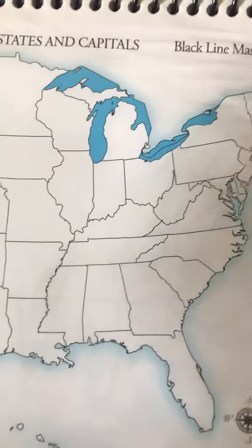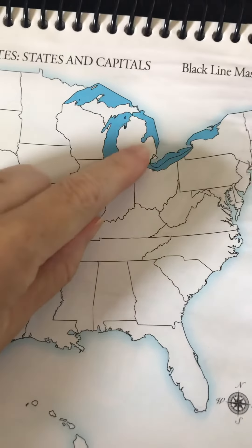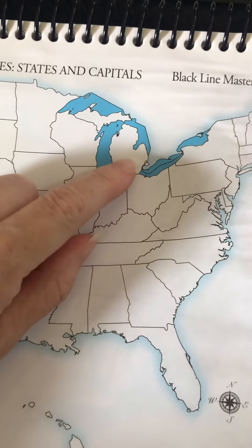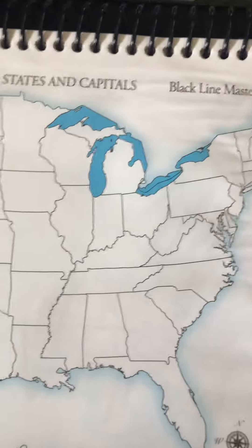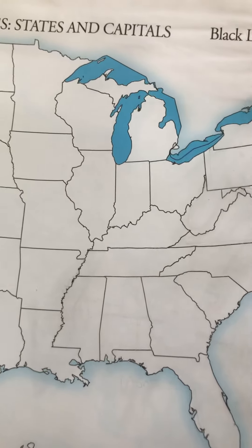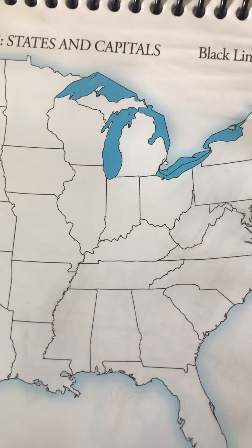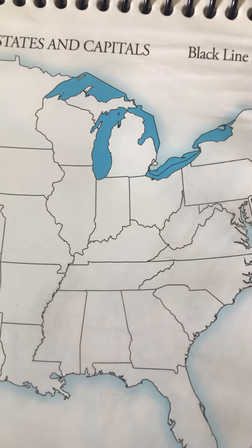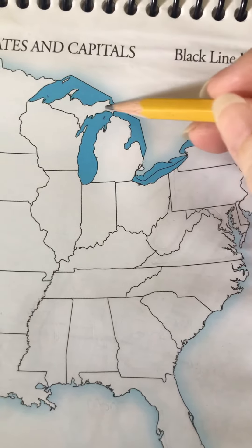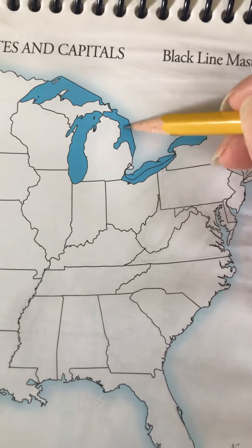For Michigan, we say it looks like a mitten, so Michigan is a mitten — and Michigan also includes this portion up here. We can remember the capital Lansing by picturing a boy named Lance who is singing. This can be his microphone and this can be his face singing, with his mouth here.